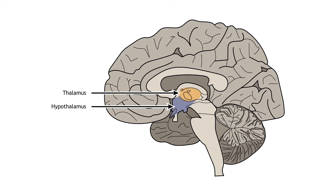The hypothalamus regulates temperature, hunger, thirst, blood volume and pressure, sleep and wakefulness, reproductive functions, and stress and fear responses.